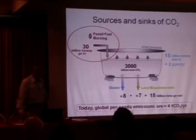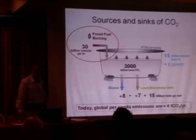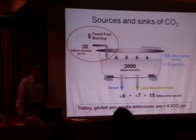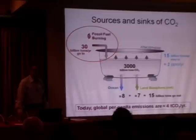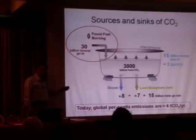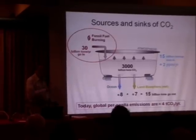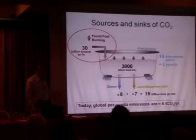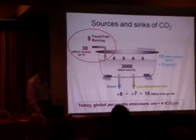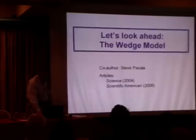Italy's number is about twice the global average — about eight tons per capita. In the United States it's about 20 tons, and in India it's about one to one and a half tons per person per year. Four tons is the world average. Now let's look at the wedge model, which I'm supposed to introduce today.